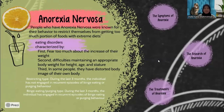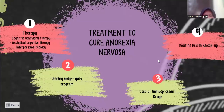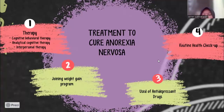Next, the treatment. When you experience the symptoms described previously, you don't have to worry because there are several ways to treat this disease, but first you should check with an expert for the best advice. The first treatment is psychological therapy, including cognitive behavioral therapy, analytical cognitive therapy, and interpersonal therapy. The second way is joining a weight recovery program supervised by a doctor when people with anorexia experience dangerous weight loss. The third is antidepressant drugs, as people with anorexia nervosa also tend to suffer from other mental disorders, so doctors will usually prescribe antidepressants at appropriate doses. The fourth way is routine health check-ups, since anorexia can cause complications in the body, requiring regular monitoring of physical condition.